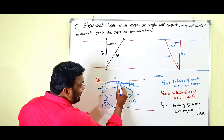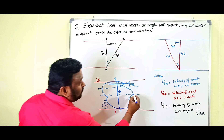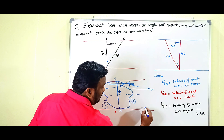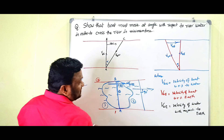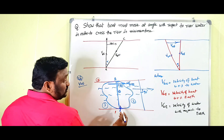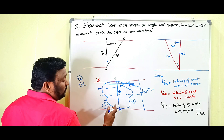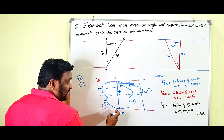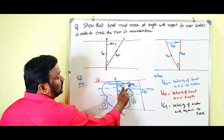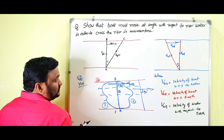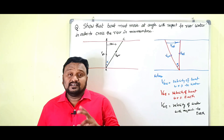The path along the width must make an angle of 90 degrees with the flow of water. The water flows in the horizontal direction, and to reach the other bank in the shortest time the boat must move along the width, making 90 degrees with the water flow. This is the minimum time concept we have to understand.